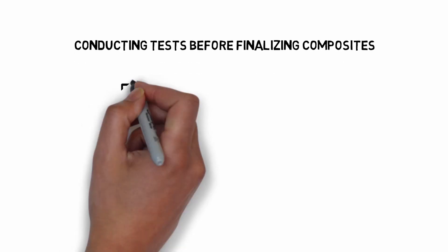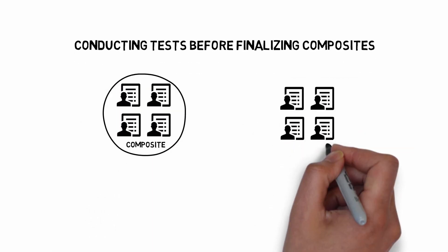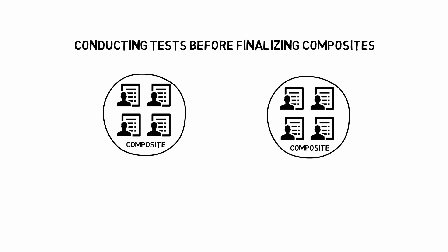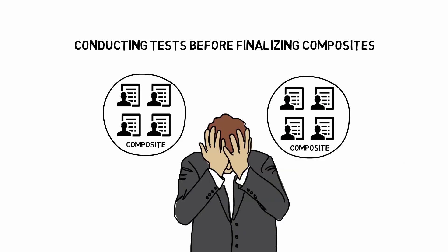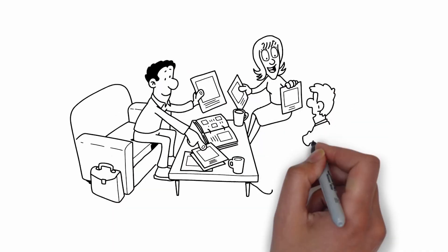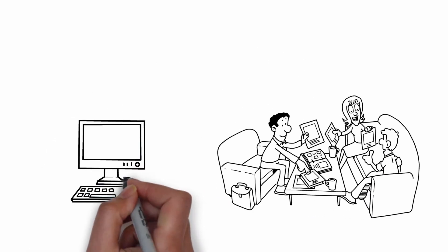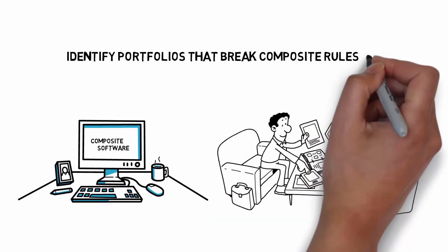Conducting tests before finalizing composites. The process of reviewing portfolios to ensure they are placed in the correct composite for the right time period can be difficult. Many firms rely on GIPS consultants or composite software to help test their composites to identify portfolios that break composite rules or exhibit outlier performance.